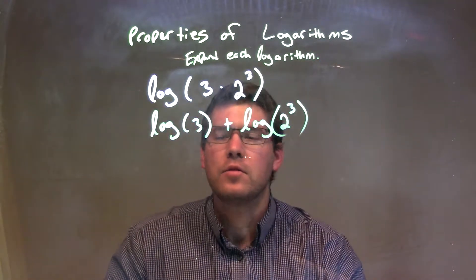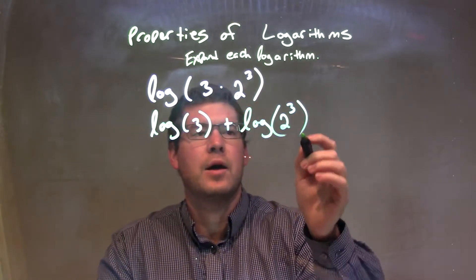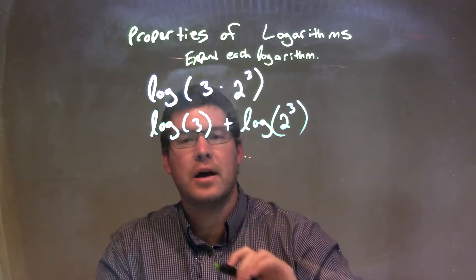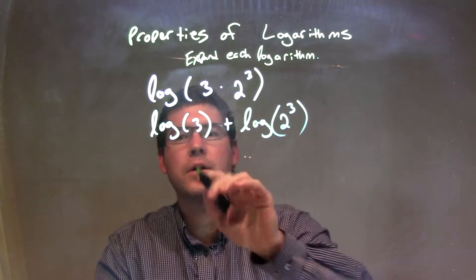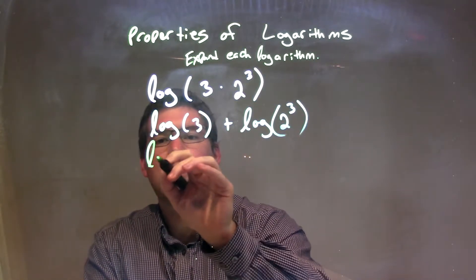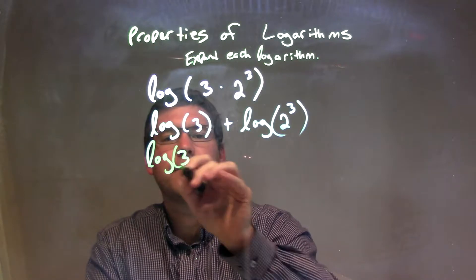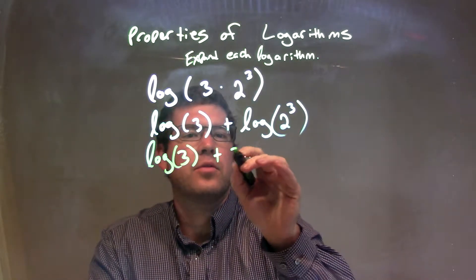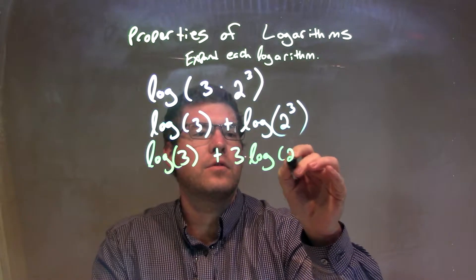So the log of 3 plus the log of 2 to the third power. The exponent can come down up front. So the exponent coming down up front, we're going to see the log of 3 plus 3 log of 2.